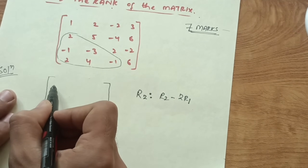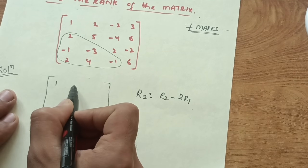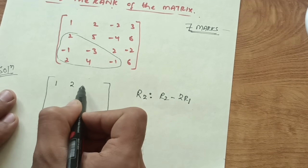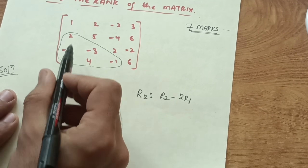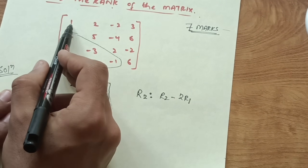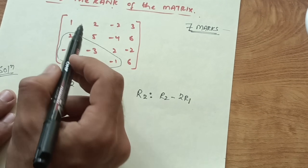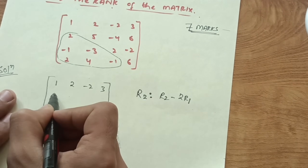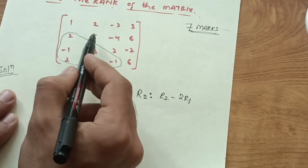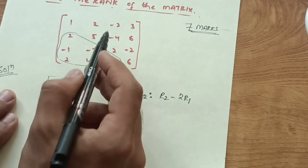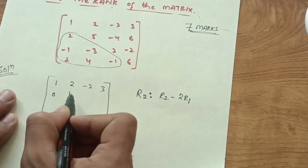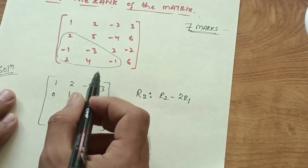After the transformation R2 - 2R1, the first row remains as 1, 2, -2, 3. Row 2 becomes: 0, then 5 - 2×2 = 1, then -4 - 2×(-2) = 0.